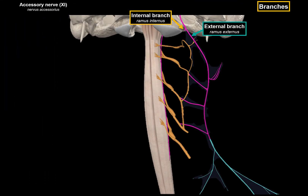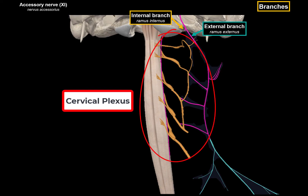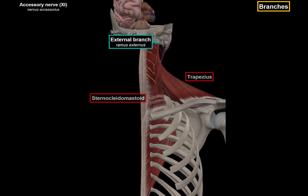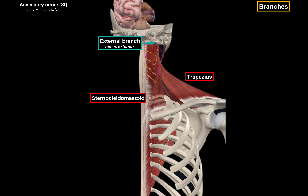The external branch descends along the neck, and on its way picks up fibers from the cervical plexus — specifically from the anterior ramus of the spinal nerves from C2, C3, and C4 spinal cord segments. It then innervates the sternocleidomastoid, which helps turn the head to the contralateral side and flexion of the neck to the ipsilateral side, and it innervates the trapezius, which helps with extension of the neck, and retraction, elevation, and rotation of the scapula.